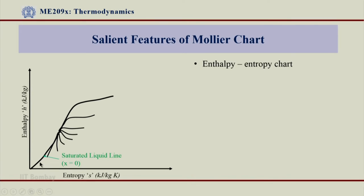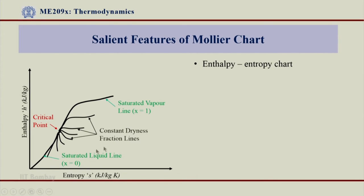So obviously, when x equals 0 it is the saturated liquid line, and the other extreme is x equals 1, which represents the saturated vapor line. All other lines shown here schematically are constant dryness fraction lines — that means x values of 0.1, 0.2, 0.3, 0.4, 0.5, and so on, up to x equals 0.9. Since we have a saturated liquid line and a saturated vapor line, they should meet each other at the critical point. So this point here is the critical point.